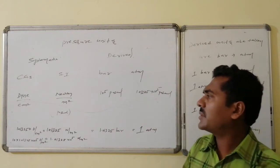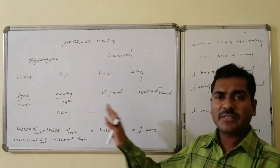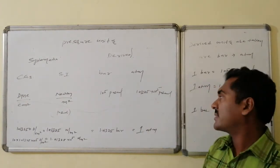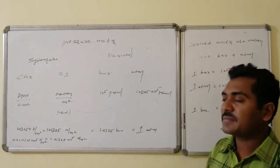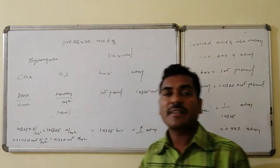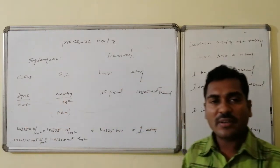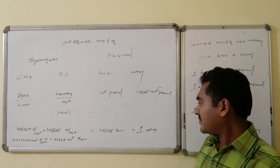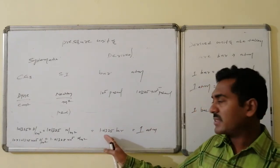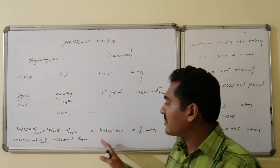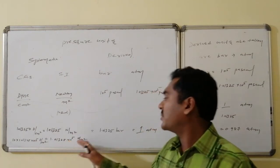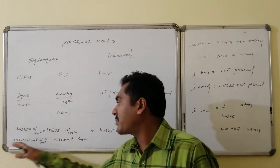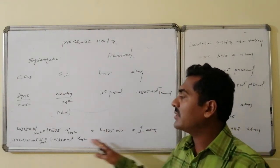Expressing bars and atmospheres in Pascals: 10⁵ Pascals = 1 bar, and 1.01325 × 10⁵ Pascals = 1 atmosphere. In terms of hierarchy: dyne per cm² is smallest, then newton per meter square (Pascal) is greater, then bar, and atmosphere is the largest unit. One atmosphere = 1.01325 bars = 1.01325 × 10⁵ N/m² = 10 × 1.01325 × 10⁵ × 10⁶ dyne/cm². These units are all interrelated with one another.